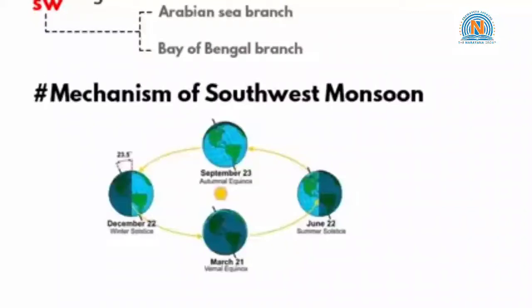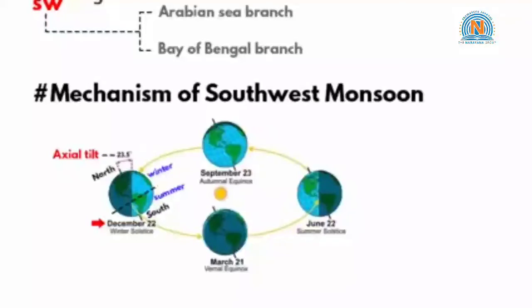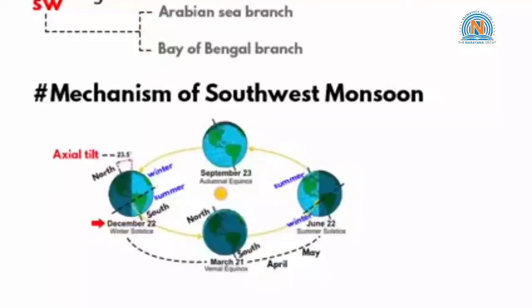Now coming to the mechanism of the southwest monsoon. This picture tells us the seasonal relationship between the Sun and the Earth. Different seasons on Earth are caused by the axial tilt of the Earth towards the Sun. During the month of December, the southern hemisphere is more exposed towards the Sun, causing summer season in the southern hemisphere, while the northern hemisphere faces winter. Right around March, the northern hemisphere slowly starts tilting towards the Sun, and by May and June, summer season starts in the northern hemisphere, which means the northern hemisphere during May, June, and July receives more solar energy.